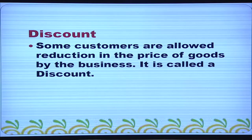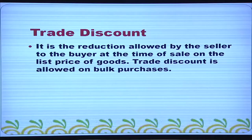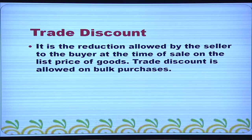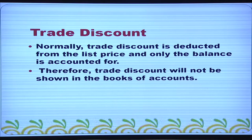Some customers are allowed a reduction in the price of goods by the business — this is known as discount. We have two types of discount: cash discount and trade discount. Trade discount is a reduction allowed by the seller to the buyer at the time of sale on the list price of goods. Trade discount is allowed on bulk purchases and is deducted from the list price; only the balance is accounted. Therefore, trade discount will not be shown in the books of account.